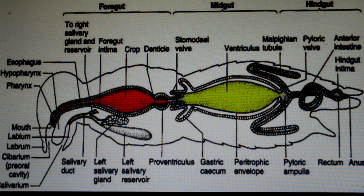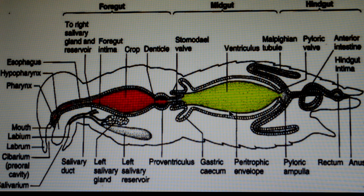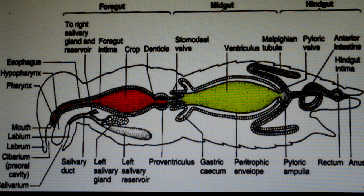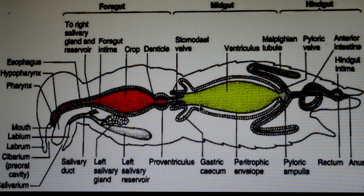The peritrophic membrane plays an important role in the insect digestive system because it protects the epithelial layer. This epithelial layer consists of cells involved in secretion of digestive enzymes and absorption of food particles. The peritrophic membrane is present in solid-feeding insects but absent in liquid-feeders.